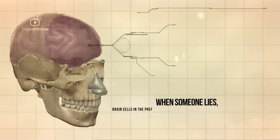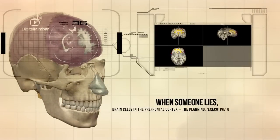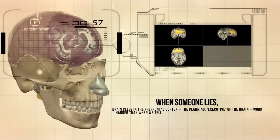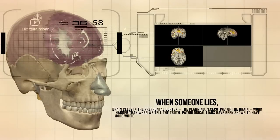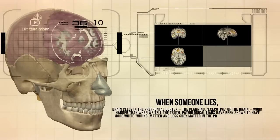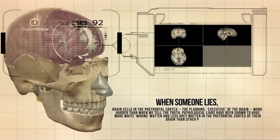When someone lies, brain cells in the prefrontal cortex, the planning executive of the brain, work harder than when we tell the truth. Pathological liars have been shown to have more white wiring matter and less gray matter in the prefrontal cortex of the brain than other people.